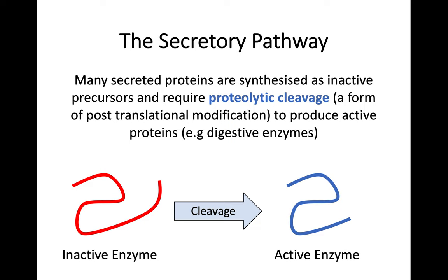The final part is another form of post-translational modification. Many secretory proteins are translated and synthesized in an inactive form, and in order for them to become active, they need to go through post-translational modification — in this case, one called proteolytic cleavage. The idea of cleavage is essentially cutting off an area, removing a part of that inactive protein to make it the active form. As shown in the diagram, a digestive enzyme that has been synthesized in its inactive form goes through the proteolytic cleavage process of post-translational modification in order to become active.